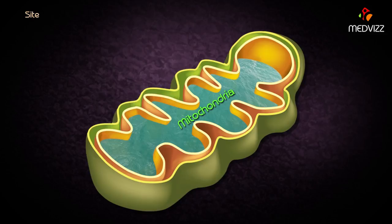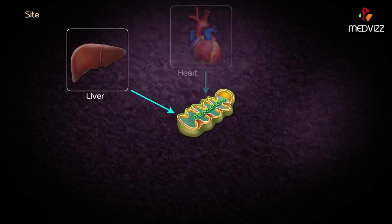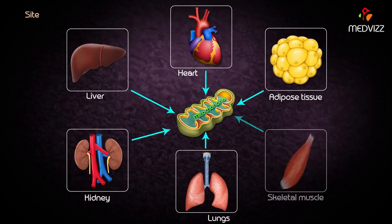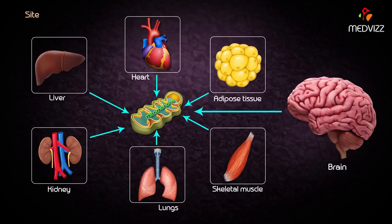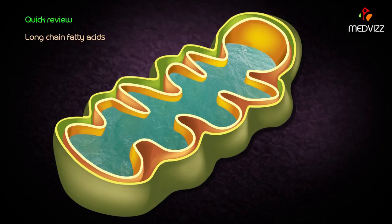The site of fatty acid oxidation occurs in the mitochondria of all types of cells like liver, heart, adipose tissue, kidney, lungs, skeletal muscles, and only to some extent in the brain, because the brain is the chief source for medium as well as short chain fatty acid oxidation.